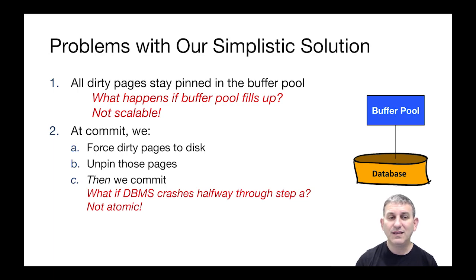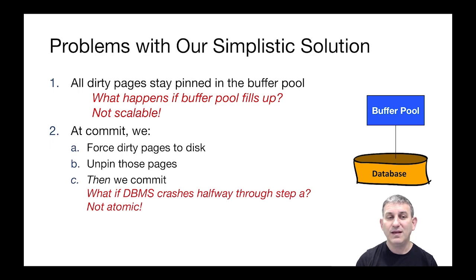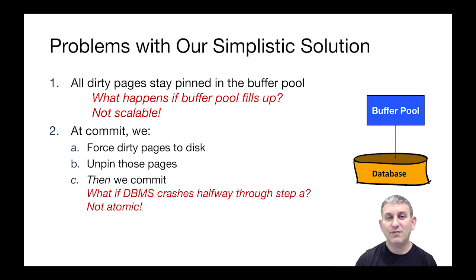The second part of our proposal said at commit time we force dirty pages to disk and then commit. But what if the database crashes halfway through? We can't force all dirty pages to disk simultaneously — that's not how disk drives work. A transaction touching a thousand pages requires a thousand separate I/Os, and a crash can happen during that time. So forcing pages to disk is not an atomic step — we can get dirty pages written to the database before we actually commit, violating atomicity. We're going to need to look for a better solution, one that's both more efficient and more reliable.